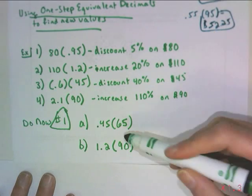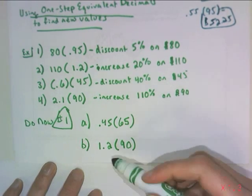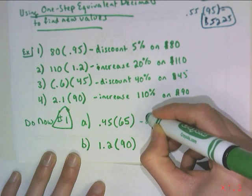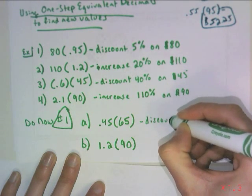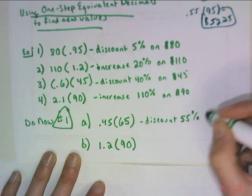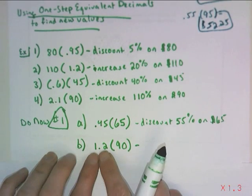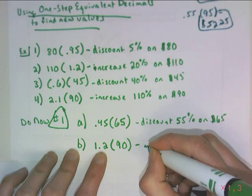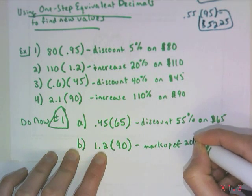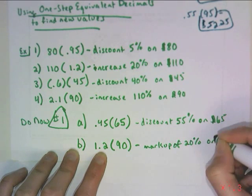So now do number 1. I'm only asking you to do the same thing for these two, 0.45 times 65, and then 1.2 times 90. So here, because the decimal is less than 1, it's a discount. And if you're paying 45%, then it's off 55% on a $65 item. So this guy is above 1, so it's a markup, an increase, of 20% on a $90 item.